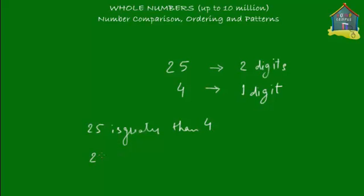This symbol here is the greater than symbol. Or you could also say that 4 is less than 25 — this is the less than symbol. So 25 is greater than 4, or 4 is less than 25.